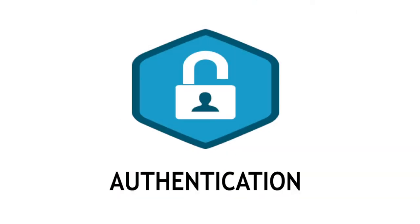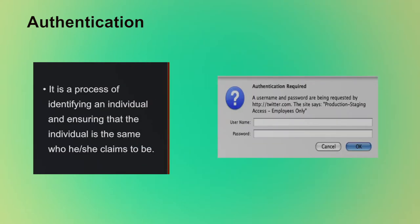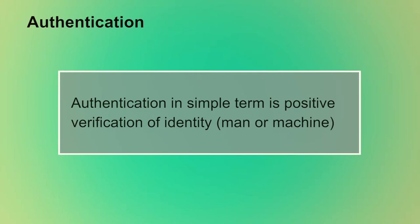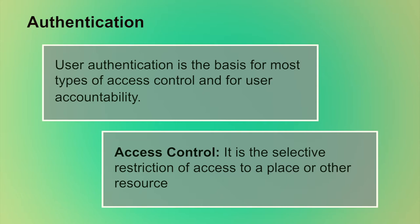The first cyber security technique is authentication. Authentication is a process of identifying an individual and ensuring that the individual is the same who he or she claims to be. It is the process of ascertaining claimed user identity by verifying user-provided evidence. For example, a username is required to identify who you are and the password is required to ensure that you are the authentic user. In most computer security concepts, user authentication is the fundamental building block and the primary line of defense. User authentication is also the basis for most types of access control and user accountability.